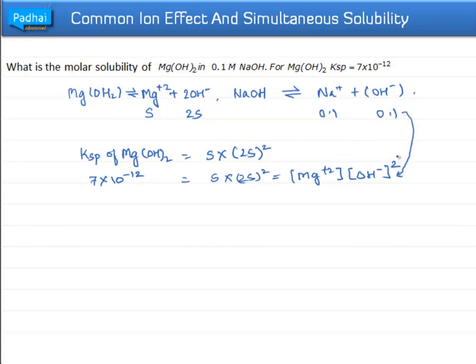In place of OH⁻, we will write the concentration of OH⁻ which came from NaOH. So, it would be 7 × 10⁻¹² equals S times (0.1)².